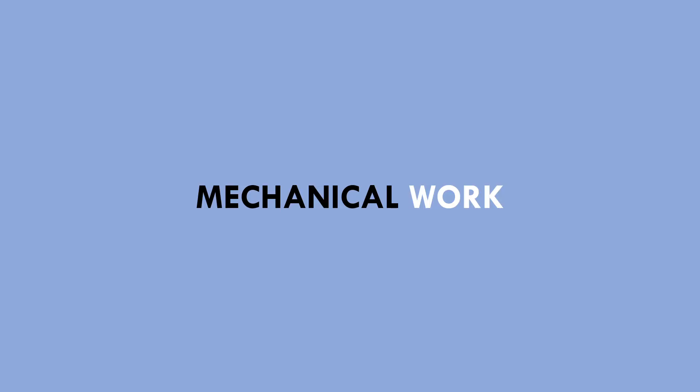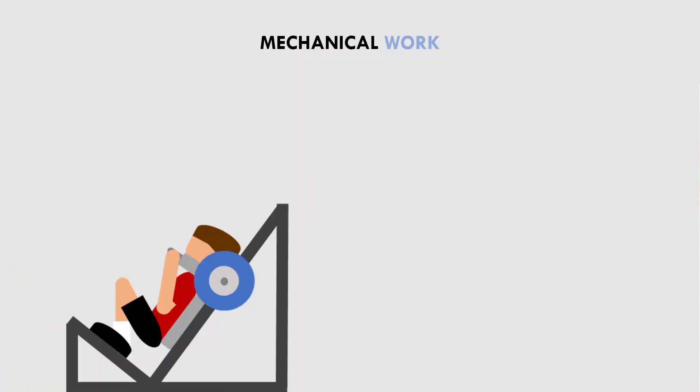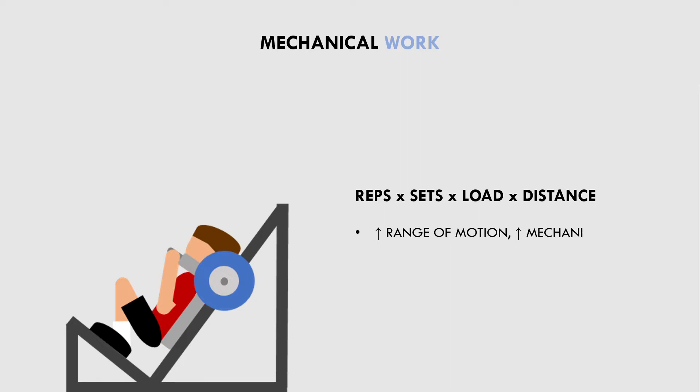First is total mechanical work. When training with a larger range of motion, we are increasing the total amount of work performed by the muscle. Mechanical work, or volume load, is calculated by multiplying reps times sets times load times distance travelled in the lift. So if we increase distance travelled by increasing range of motion, we will perform more mechanical work per set. Although this comes with the trade-off that load or reps will be reduced, the net mechanical work will probably still be greater using the larger range of motion.